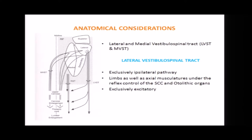In contrast, the lateral vestibulospinal tract consists of excitatory axons and they are exclusively ipsilateral. Most fibers of the lateral vestibulospinal tract originate from the lateral nucleus, with a slight contribution from the descending vestibular nucleus. These travel the entire length of the spinal column and bring not only the axial but also the proximal limbs under the control of the labyrinth.